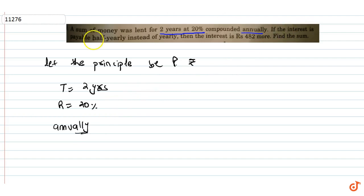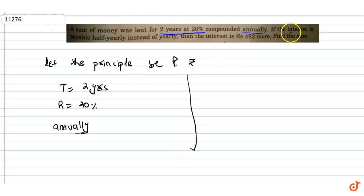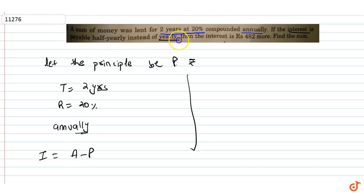Now the other part: if the interest is payable half-yearly instead of yearly. Interest is basically Amount minus Principal.